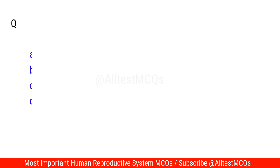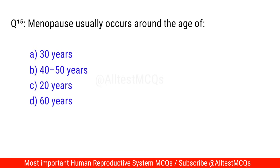Question No. 15: Menopause usually occurs around the age of? The right option is B. 40 to 50 years.